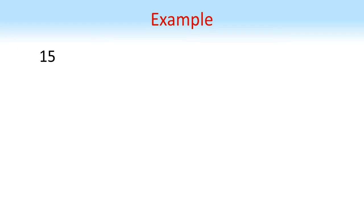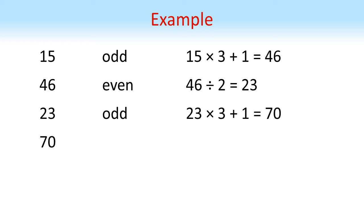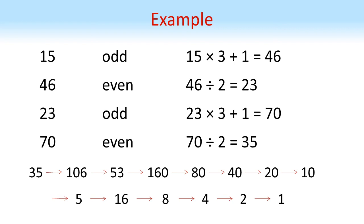Let's try a different example. Let's take the number 15. This one's odd, so we multiply by three and add one to give 46. 46 is even, so we halve it to get 23. Another odd number, so again we times by three and add one to give 70. 70 is even again, so we halve that to give 35.